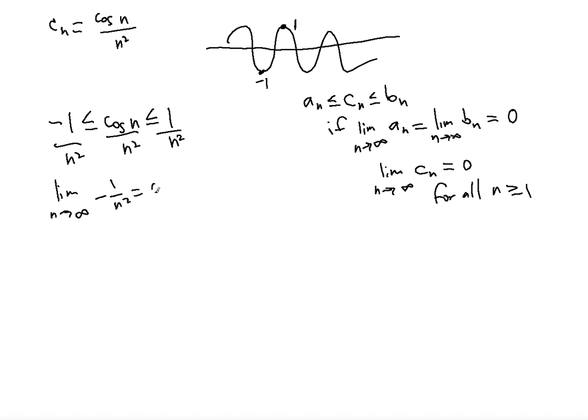Now notice that if you take the limit as n approaches infinity of negative one over n squared, it will be zero. And the same thing will be true as n approaches infinity for one over n squared—the upper boundary for cosine n over n squared—it will also be zero.